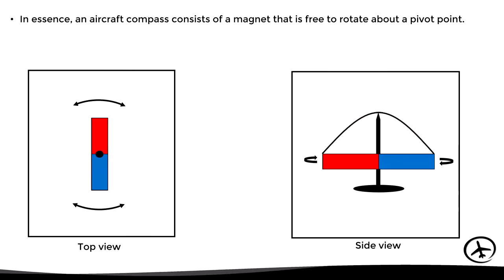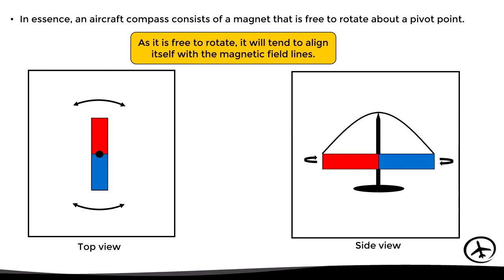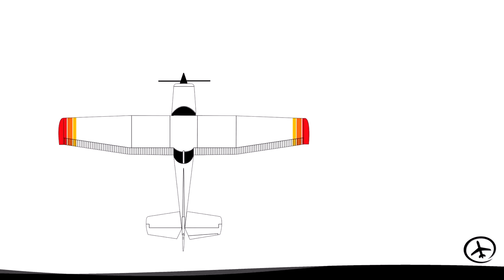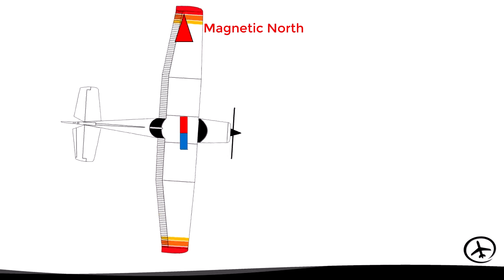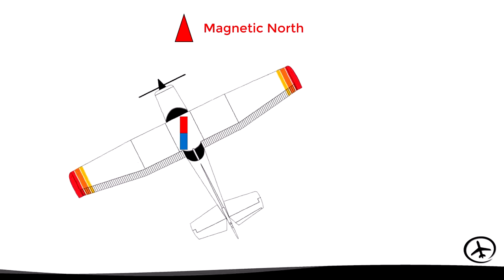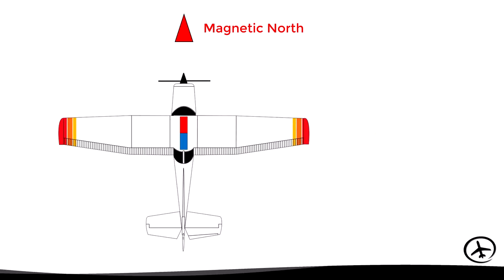Now as the magnet is free to rotate, it will tend to align itself with the earth's magnetic field lines. If we put this system inside an aircraft, regardless of the aircraft's heading changes, the magnet will remain aligned with the magnetic north.